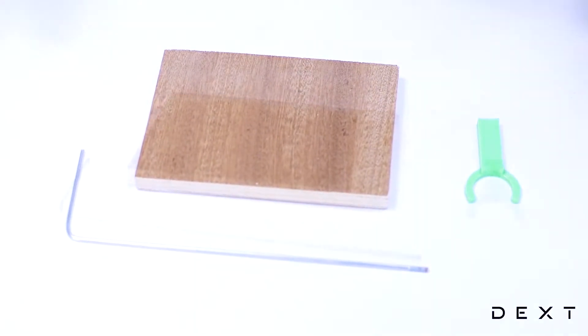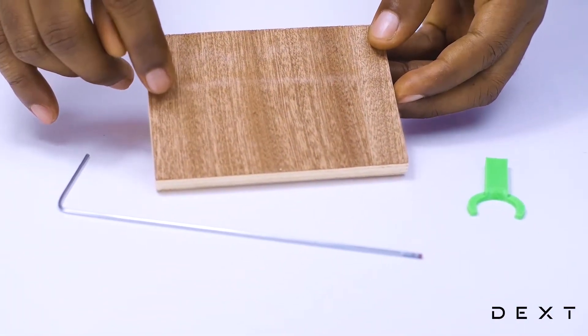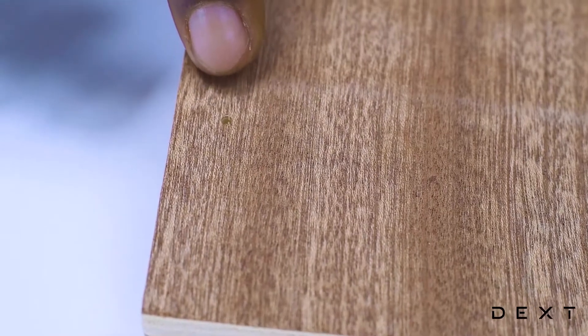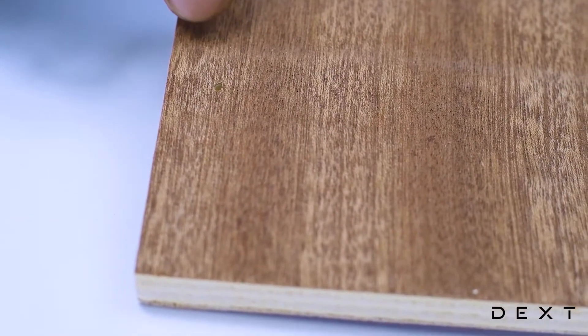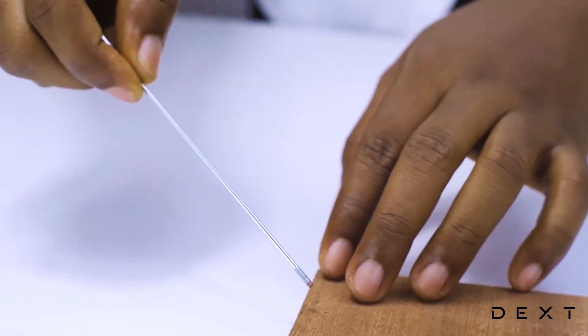To build our retort stand, we will be using this tiny hole inside the wooden slab. We are going to thread our metal rod through this tiny hole.